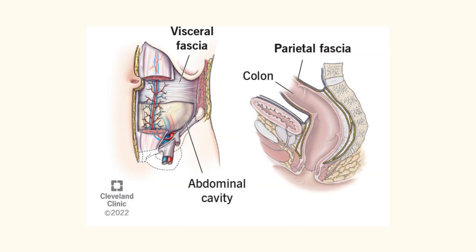The next layer is visceral fascia. Similar to how we have visceral linings, visceral fascia surrounds organs and cavities like the abdomen, the lung — your pleura — and heart — the pericardium. And lastly, we have parietal fascia. Parietal fascia is a general term for tissues that line the wall of a body cavity just outside of the parietal layer of the serosa. The most commonly known parietal fascia is actually found in the pelvis.